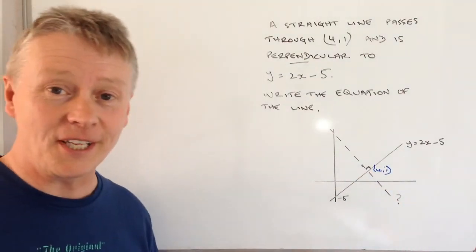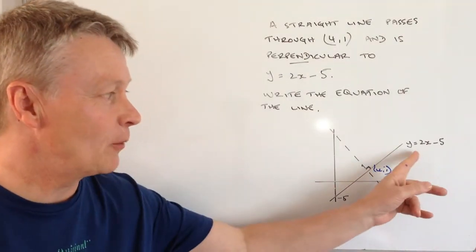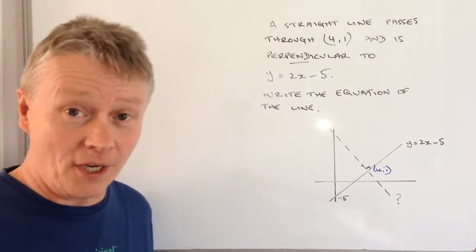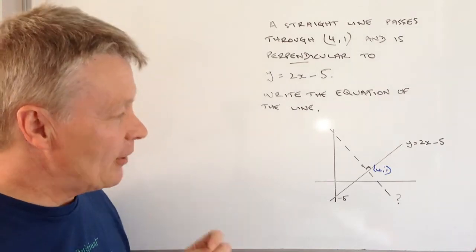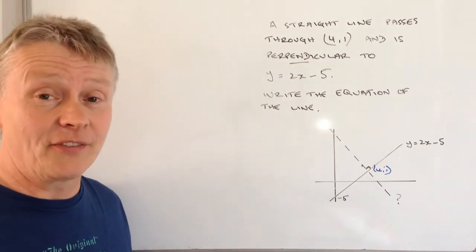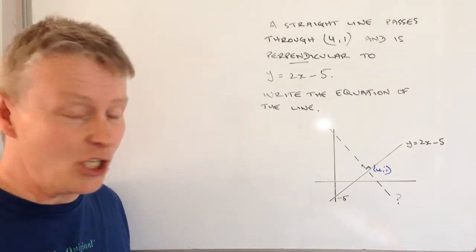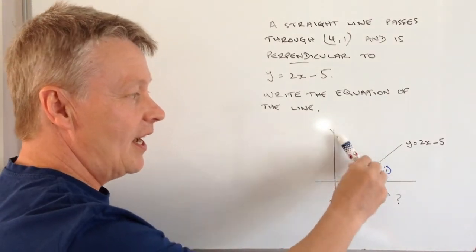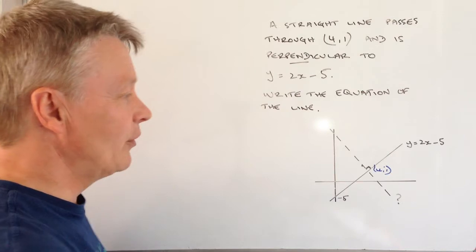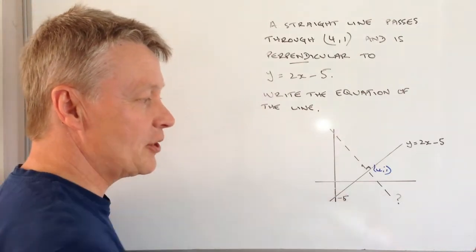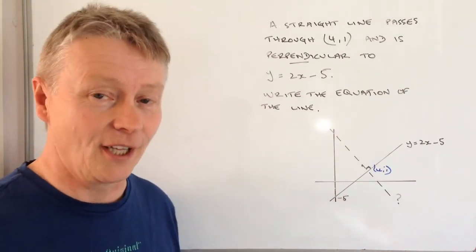And it's perpendicular to an existing line, which is y = 2x - 5. Now if it's perpendicular, it means that it's at 90 degrees. It cuts across this line.